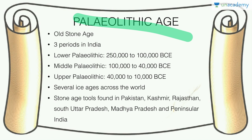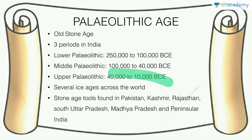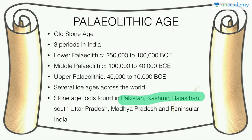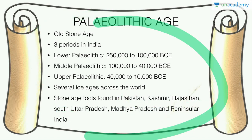The Paleolithic age was the longest period of the Stone Age, from about 2,50,000 years ago to 10,000 years ago. It had many ice ages and is divided into three periods: lower, middle, and upper Paleolithic. Sites from this period are found in Pakistan, Kashmir, Rajasthan, Uttar Pradesh, Madhya Pradesh, Peninsular India, and more. This is the background of life beginning in the Indian subcontinent.